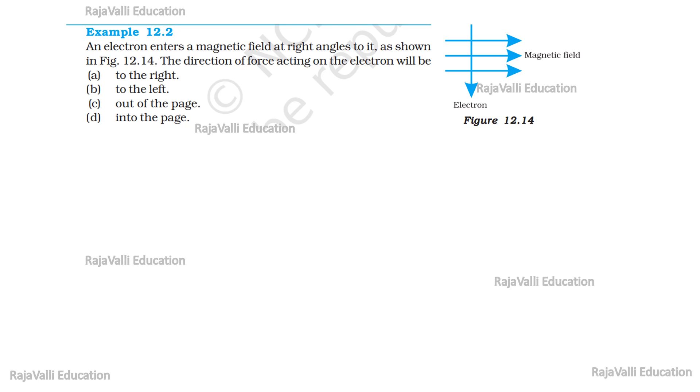The question is, an electron enters a magnetic field at right angles to it as shown in the figure. The direction of force acting on the electron will be: first option is to the right, second is to the left, third is out of the page, fourth is into the page.